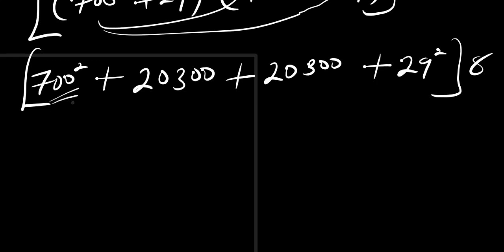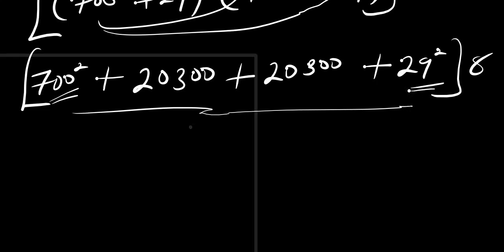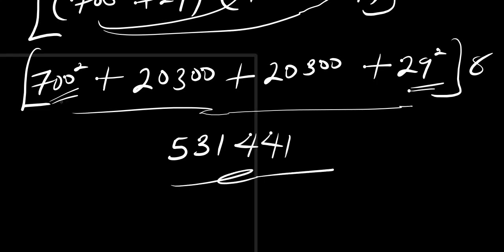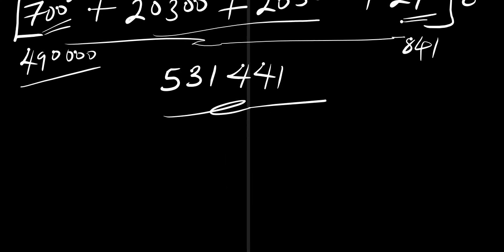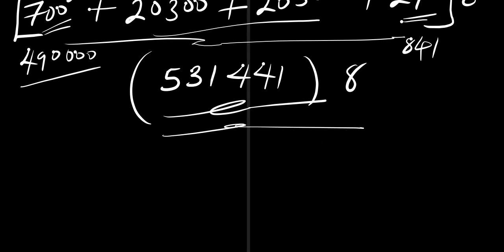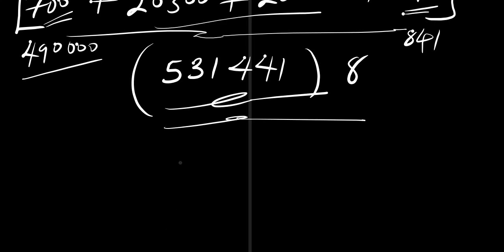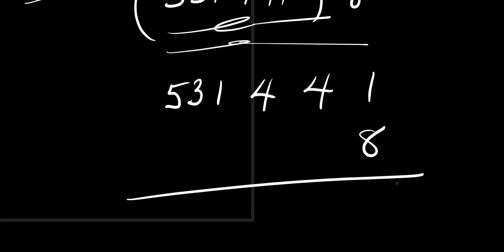So 700 squared is 490,000. 29 squared is 841. The two cross terms each give 700 times 29 equals 20,300, so together that's 4,600 plus the middle terms. Adding everything: 490,000 plus 4,600 plus 841 gives us 531,441. Now the next thing is to multiply 531,441 by 8.